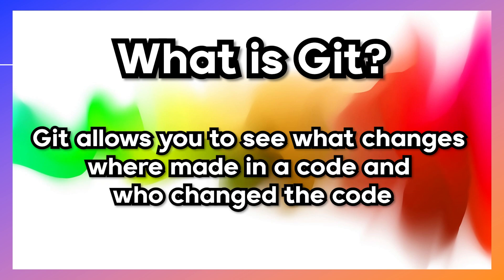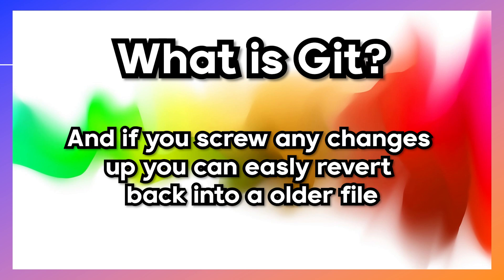Git allows you to see what changes were made in a code and who changed the code. And if you screw any changes up you can easily revert into an older file.